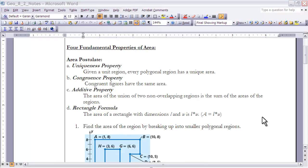The congruence property just says that if you have figures that are congruent to each other, well then their areas must be the same as well. The third property, the additive property, says the area of the union of two non-overlapping regions is the sum of the areas of the regions. What the additive property does is it allows us to take a figure and break it into other figures that we can find the area of. As long as we've covered the entire figure, we can add those areas together to get the area of the entire figure. We'll really be applying that today in some of our problems.